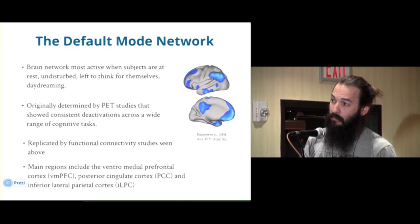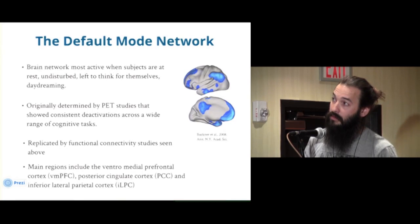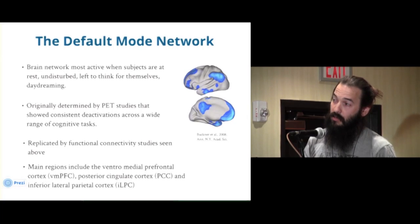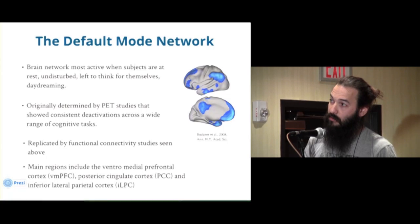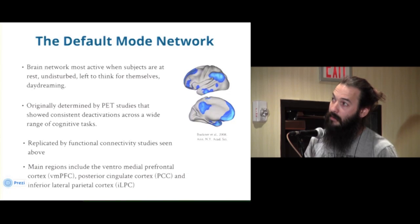The main regions involved in the default mode network — shown here on the left hemisphere, both lateral and medial surfaces — are the ventromedial prefrontal cortex, the posterior cingulate cortex, and the inferior lateral parietal cortices on both sides of the brain. These three regions are consistently correlated across many different studies.